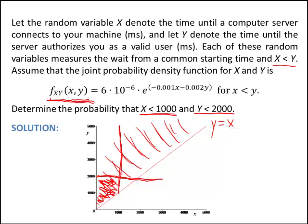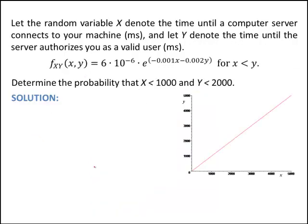When we go to set up the double integral, we're integrating over this region where x is less than 1,000 and y is less than 2,000. I'll let the outer integral be in x. You can see in this region that x goes from 0 to 1,000, so the outer integral runs from 0 to 1,000.